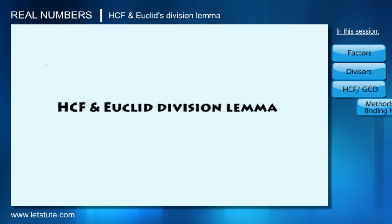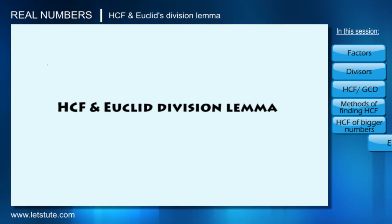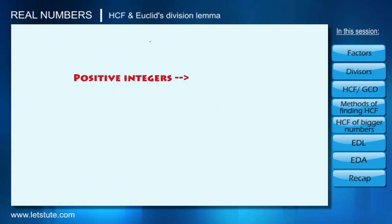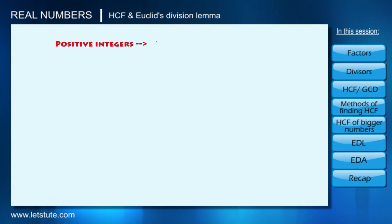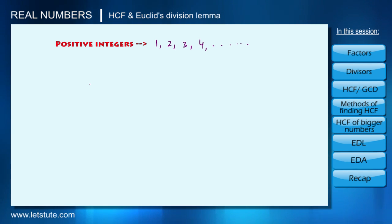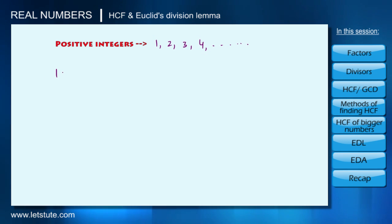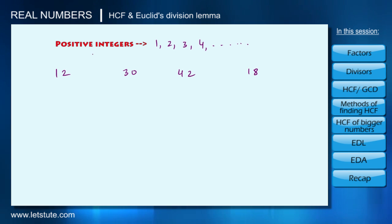Hello everyone. In the previous session we learned about positive integers, which are simply counting numbers 1, 2, 3, 4 and so on. In this session we are going to learn something more about these positive integers. Let's take some positive integers — say 12, 30, 42, and 18. Can you tell me what is common between these positive integers?